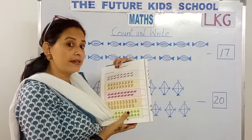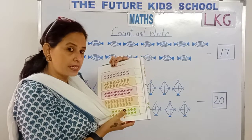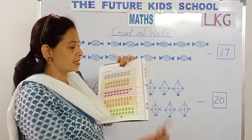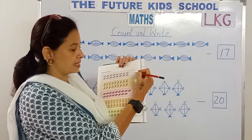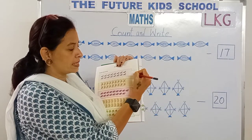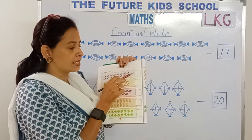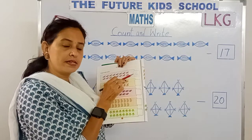16 ants. 1 and 6, 16. Write the number 16 — 1 and 6, 16.